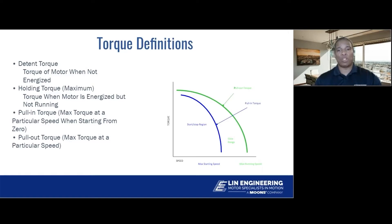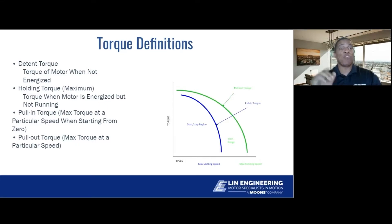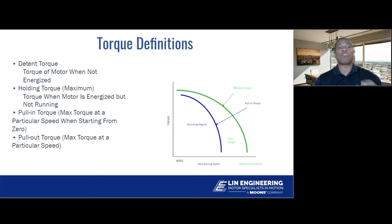Pull-in torque is best thought of as the highest amount of torque a motor can generate instantaneously at any given speed. So if you're moving at 200 PPS — that is one RPS for a 1.8-degree step motor — it will give you a certain amount of torque instantaneously. Pull-out torque is the highest combination of torque and speed that a motor can generate, but it's not instantaneous — you will have to ramp up to that torque and speed, hold it for your operation, and then ramp down.